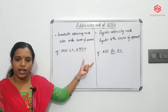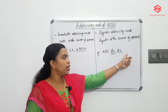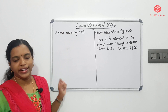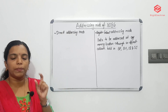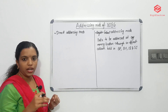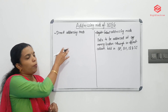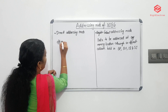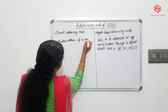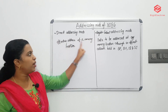The third one is direct addressing mode. In direct addressing mode, the effective address of a memory location is directly used in the instruction.